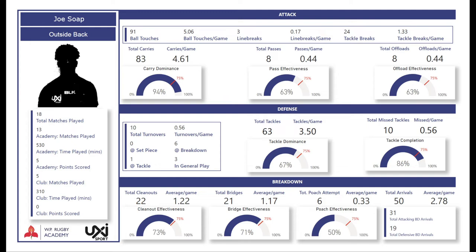Ball touches include carries and passes but do not include offloads, because offloads are logged at a tackle situation where a carry has already been logged. So ball touches equals carries plus passes, giving your total touches, and then touches per game. Line breaks are whenever you beat the main line of defense — you can break either around the defense or between two defenders — and we have line breaks per game. Tackle breaks are when an opposition player attempts to tackle or impede the attacking player and he successfully continues to advance, losing the tackler.